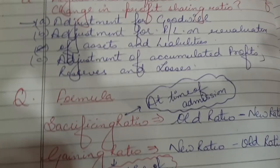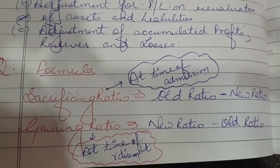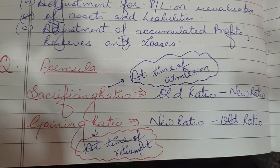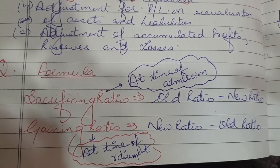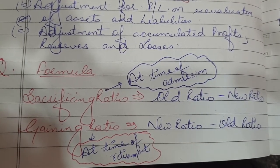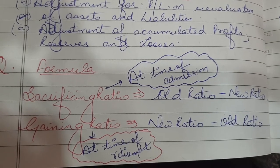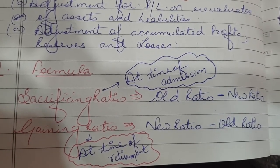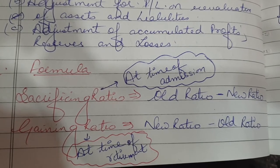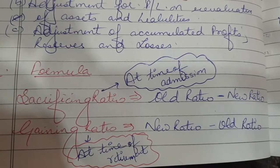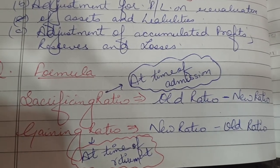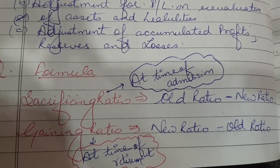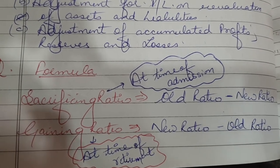What is the formula for sacrificing ratio? It is old ratio minus new ratio. Remember the mnemonic 'SON': Sacrificing ratio = Old ratio minus New ratio. Never mix up these formulas. This ratio is calculated at the time of admission of a partner.